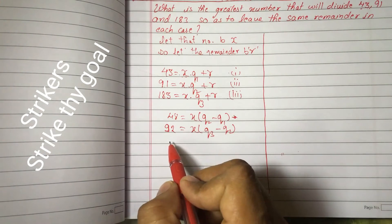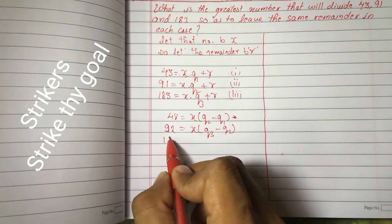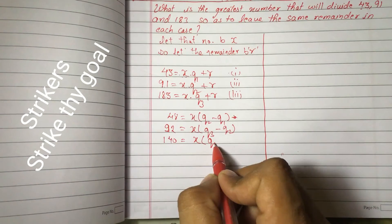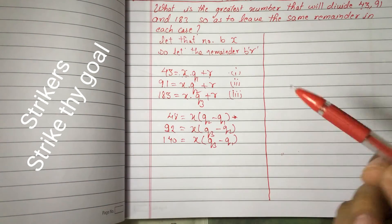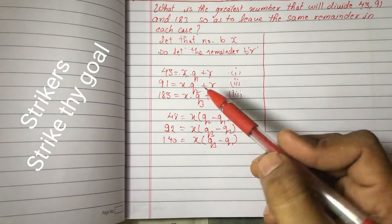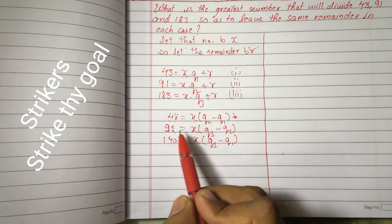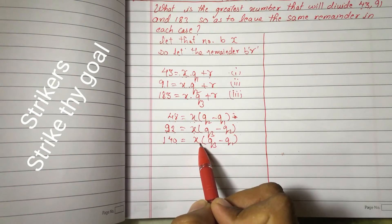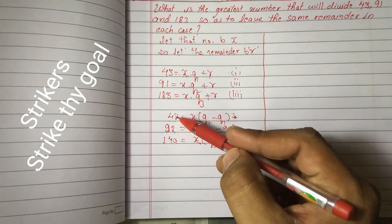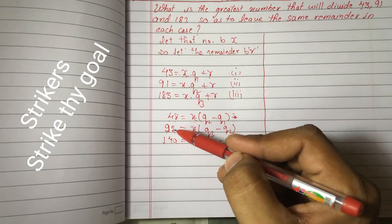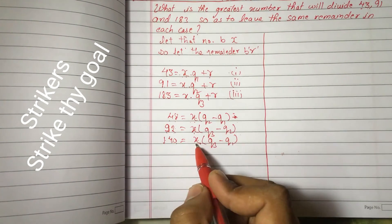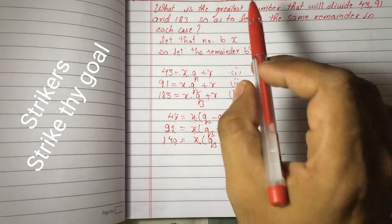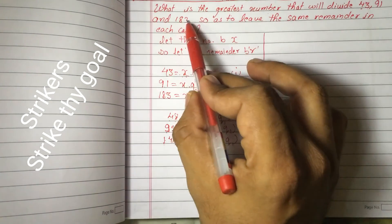Similarly, subtracting Equation 1 from Equation 3, you get 140 = X × (Q3 − Q1). From these results we can see that 48, 92, and 140 are all divisible by X. Therefore X is a factor of 48, 92, and 140. But we want the greatest such number that divides 43, 91, and 183 leaving the same remainder.